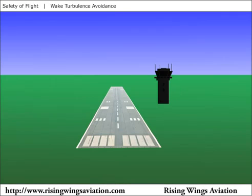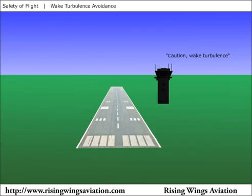Depending on the circumstances, air traffic control may inform you of traffic you are following at a proximity such that wake turbulence will be a factor. Air traffic control will use the phrase 'caution wake turbulence' and advise you of the traffic. Air traffic control is not responsible for your wake turbulence avoidance. The controller will expect you to adjust your flight path as necessary to avoid the wake turbulence while conforming with your air traffic control clearance or instructions. If you are unsure about where the wake turbulence is or you are uncomfortable, don't hesitate to take the appropriate action, such as performing a go-around and reporting to the tower that you were not comfortable with the wake turbulence.